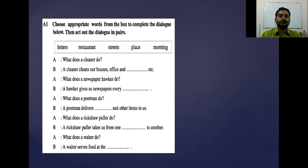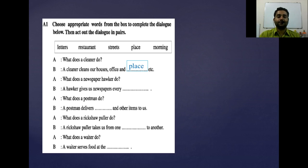Now we may read out the dialogue. A asks: 'What does a cleaner do?' B answers: 'A cleaner cleans our houses, office, and place, etc.'